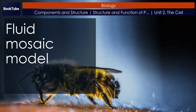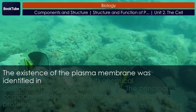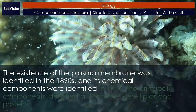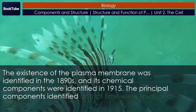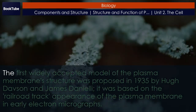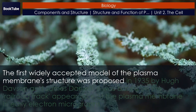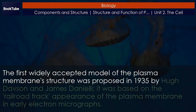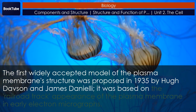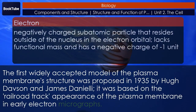The existence of the plasma membrane was identified in the 1890s, and its chemical components were identified in 1915. The principal components identified at that time were lipids and proteins. The first widely accepted model of the plasma membrane structure was proposed in 1935 by Hugh Davison and James Danielli. It was based on the railroad track appearance of the plasma membrane in early electron micrographs.